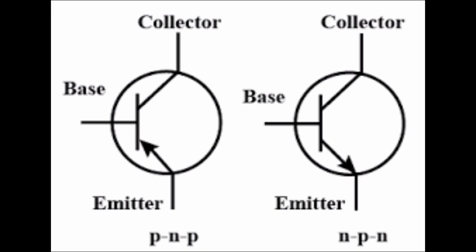There are two types of transistors: PNP transistor and NPN transistor. This is the symbol of the PNP and NPN transistor. There are three terminals: collector, base, and emitter. In PNP, the arrow goes inside at the emitter terminal. In NPN transistor, the arrow goes outside of the emitter terminal.